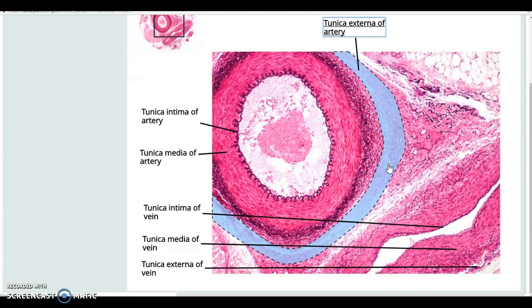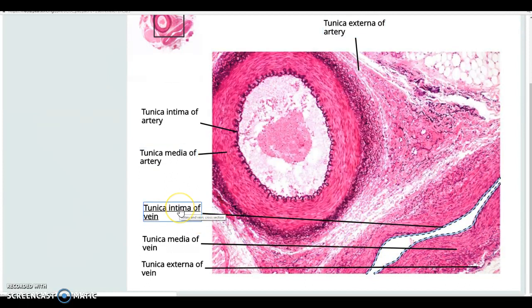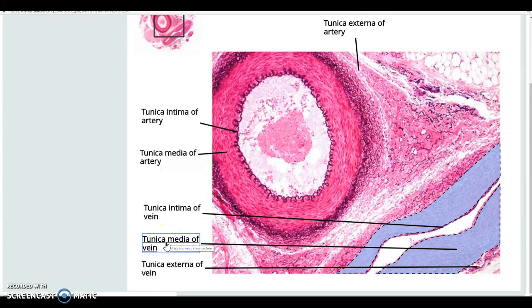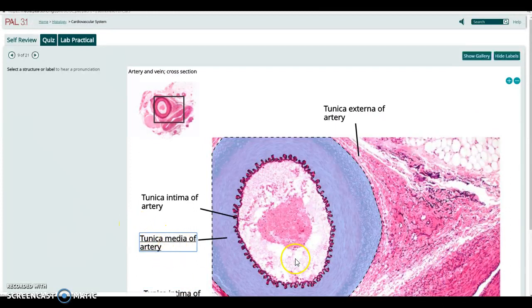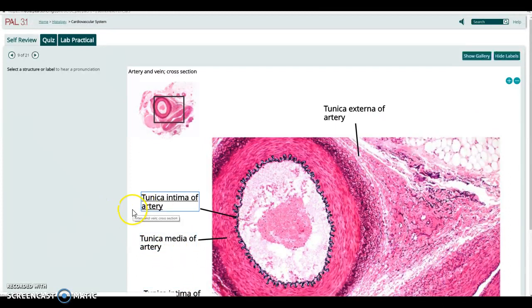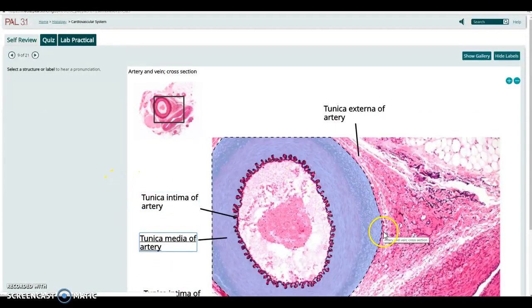Now a vein has the same layers, but tend to be much thinner. The tunica intima, just the same. You've got that tunica media, the muscular wall and a much thinner tunica externa and it doesn't hold its shape as well because you just don't have those tough connective tissues, nor as much elastic tissue in the vein. The elastic fibers being seen as all those kind of dark curly Q fibers running through there.